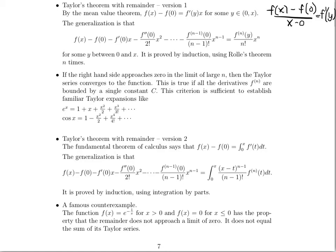This is true if all the derivatives are bounded by a single constant c. This criterion is sufficient to establish familiar Taylor expansions. For example, e to the x equals 1 plus x plus x squared over 2 plus x cubed over 3 factorial plus x to the fourth over 4 factorial, and so on. Cosine x equals 1 minus x squared over 2 factorial plus x to the fourth over 4 factorial minus x to the sixth over 6 factorial, and so on.